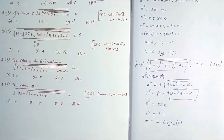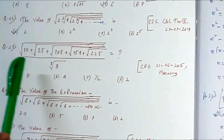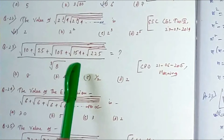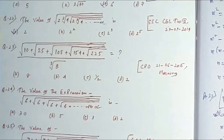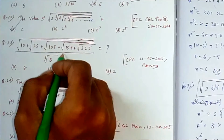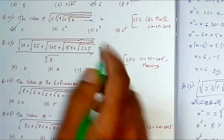Now let's move to the next problem. Question 23: find the value of √(10+√(25+√(108+√(154+√(100+√225))))) ÷ ∛8. This question came in CPO 2015 morning shift. The options are: option A is 8, option B is 4, option C is 1/2, and option D is 2. Please pause and try it yourself. This time I will solve it directly on the question.